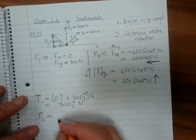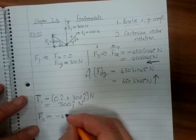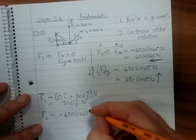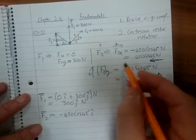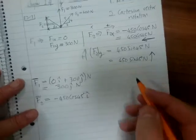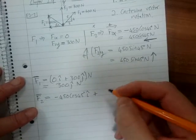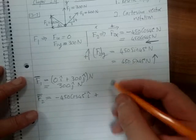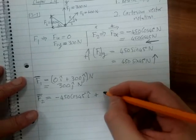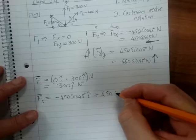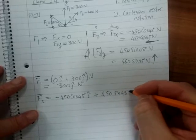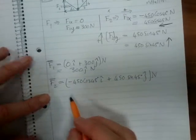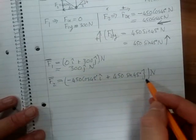F2 would be minus 450 cos 45 in the I—oh I see I've forgotten F3 but we'll get to that now—plus 450 sine 45 in the J. That is how you represent this force here in Cartesian vector form.